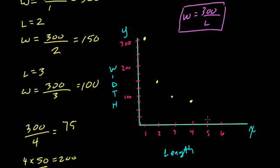5 is going to get to what? Well, 5 times 60 is 300, so 60. And 6 times 50 is also 300. And you know, this does have a downward trend because we know that 10 goes to 30.